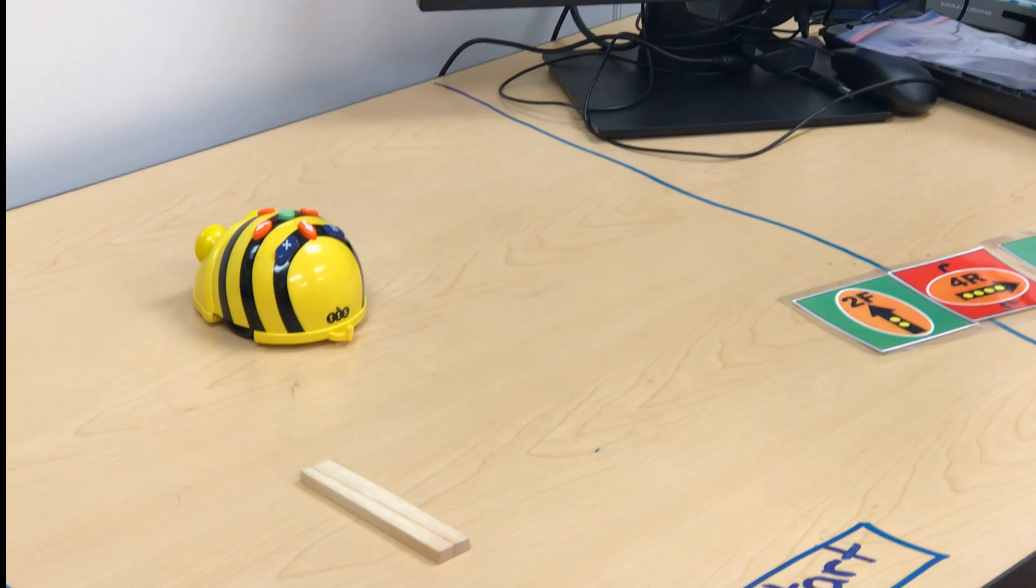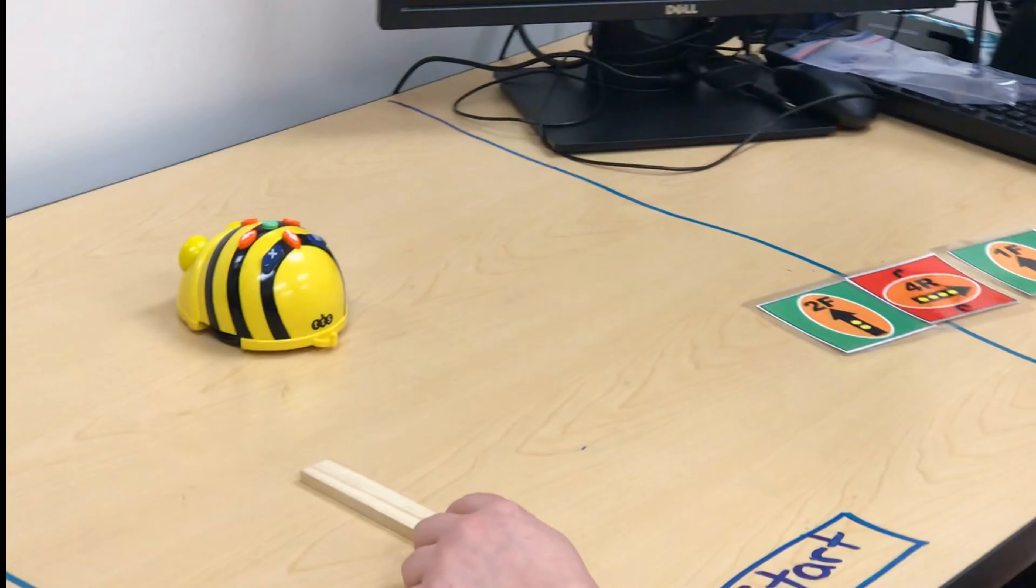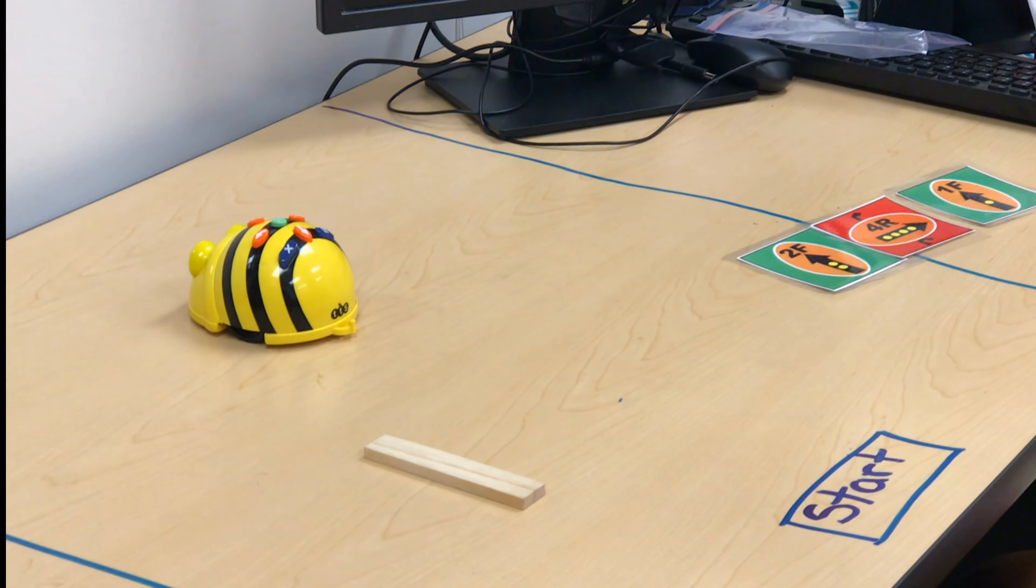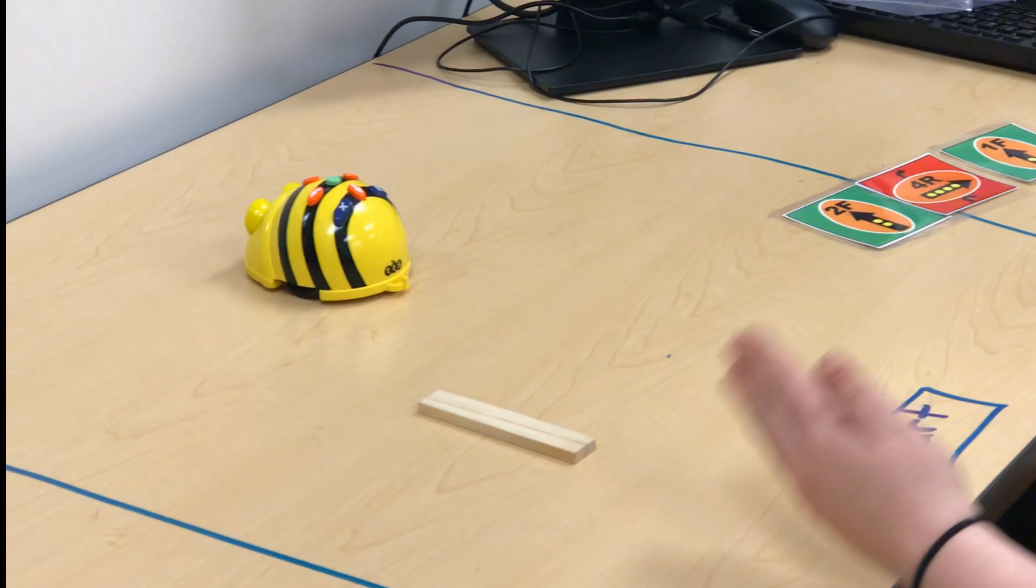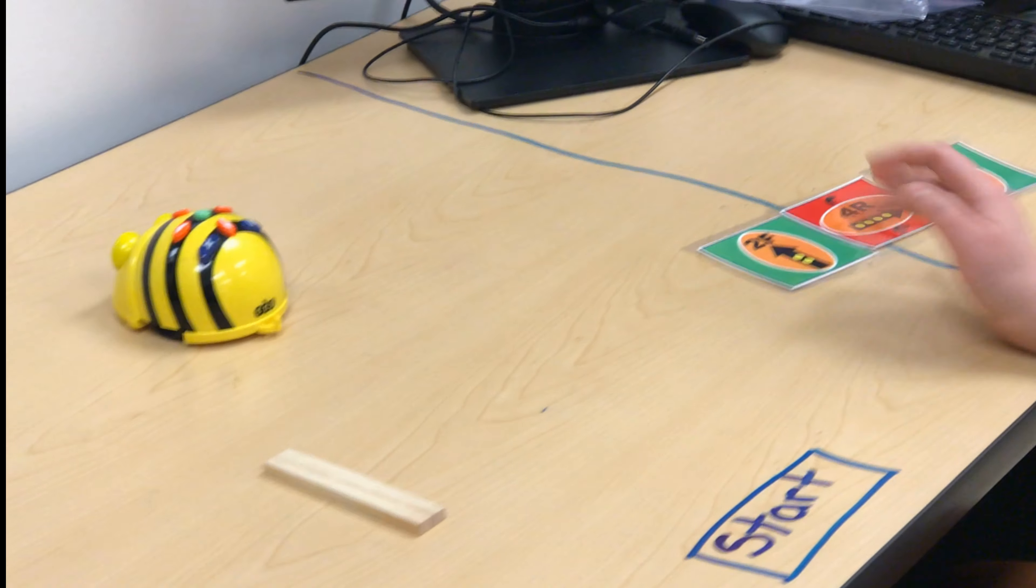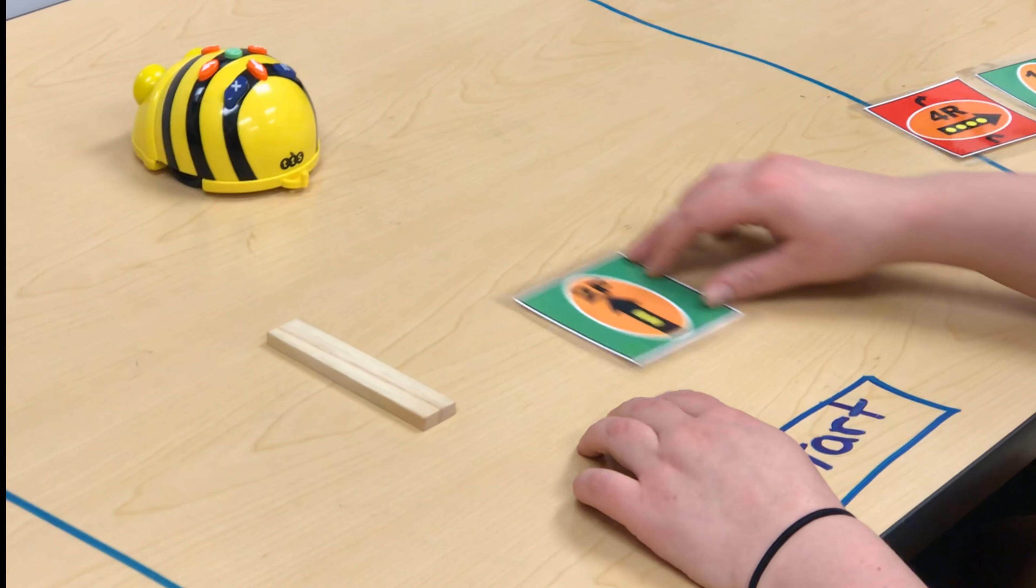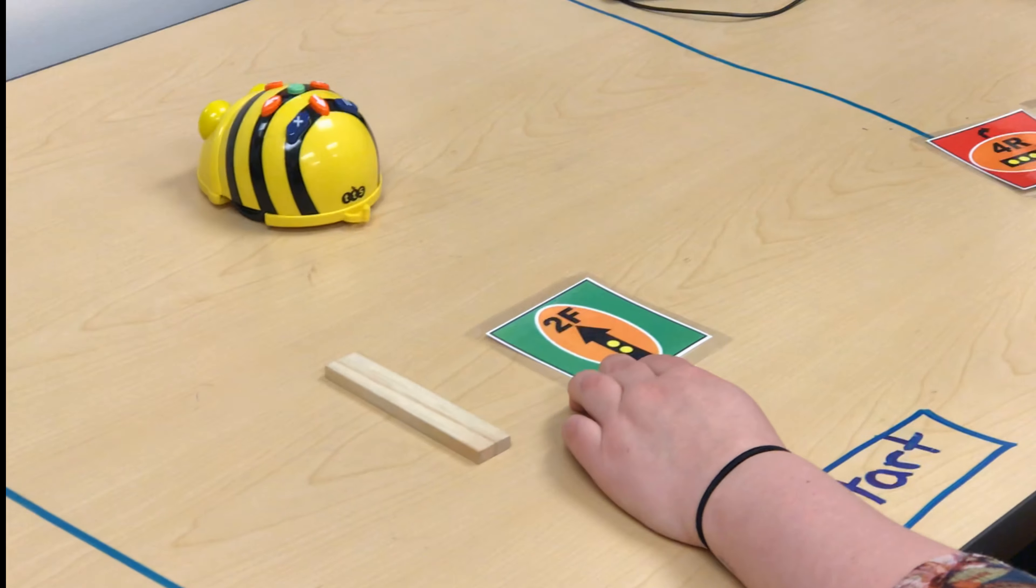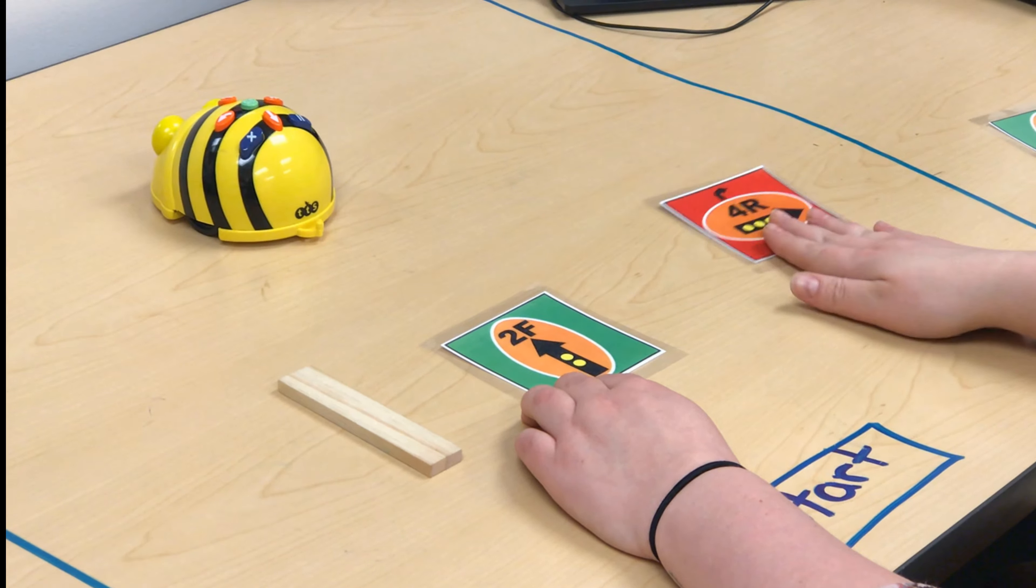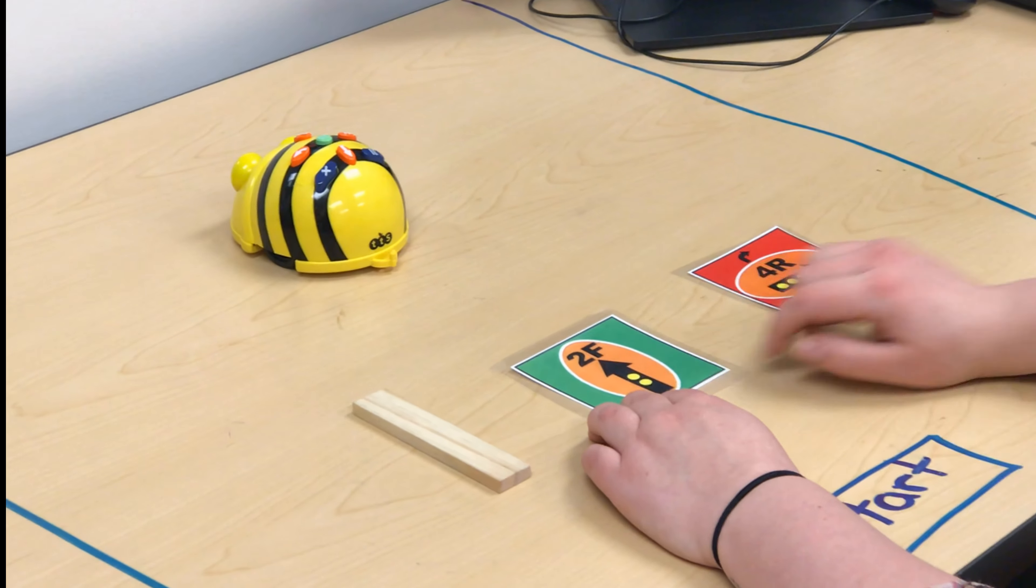So my Bee-Bot did not end where my finish line was. Now this is the most important part. I need to reflect and say what happened. Why didn't it go over here? I'm going to look back at my code. Two forward. I'm going to say maybe one, two. I think that part went right.